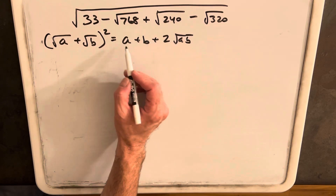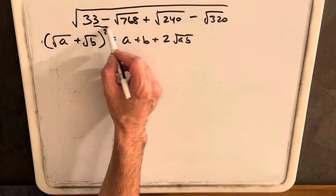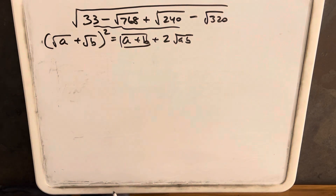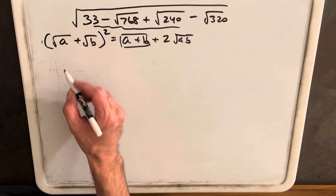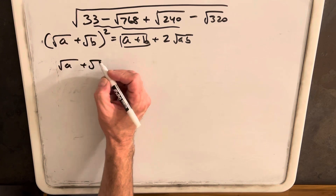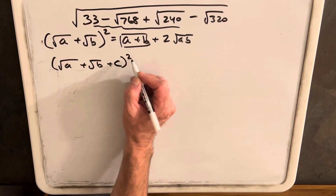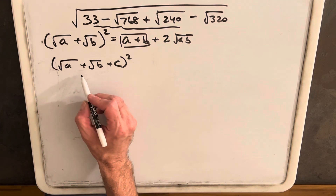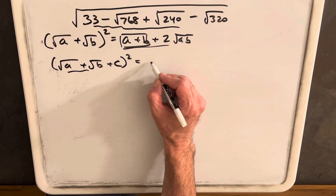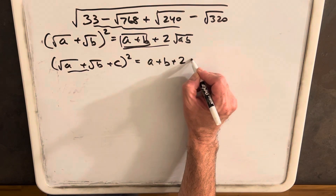Now we notice this doesn't really look like we've got four terms in our radical — this is just a number, so it's really just two terms. But what we can do is look at the square root of A plus the square root of B plus C. When we square that, we're squaring this first term, which we already know: that piece is going to be A plus B plus 2 times the square root of AB.